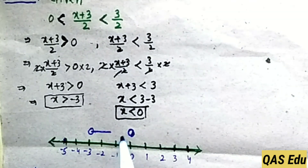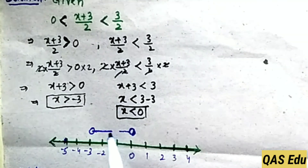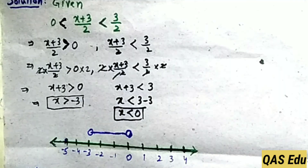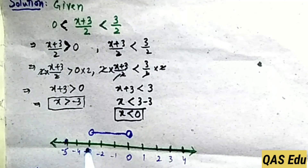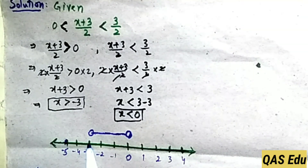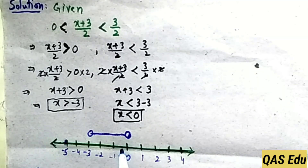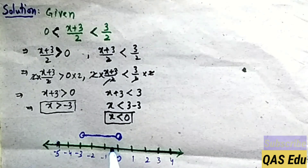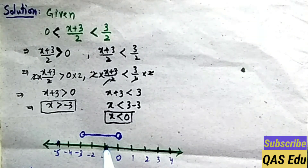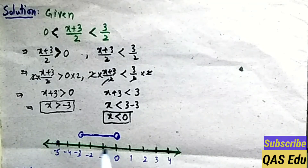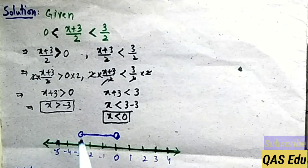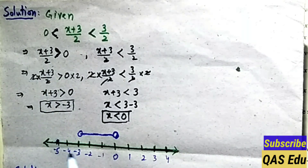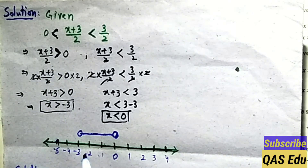x is greater than minus 3: since minus 3 is not included, draw an empty circle at minus 3, arrow pointing right. x is less than 0: since 0 is not included, draw an empty circle at 0, arrow pointing left. The solution region is values between minus 3 and 0, not including endpoints — for example minus 2.9 up to minus 0.1. This shows the given inequality on the number line.